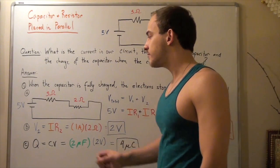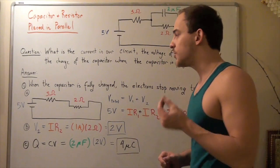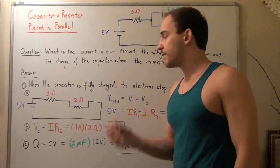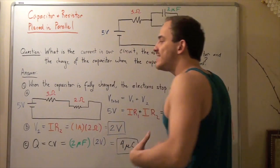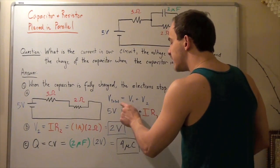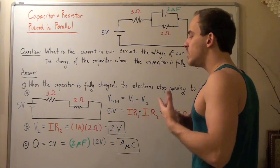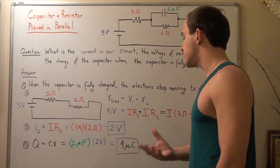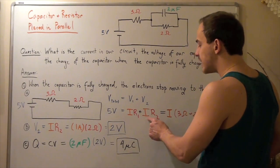They're adjacent to one another, and that means the current that goes through this resistor is the same as the current that goes through this resistor. That's because of conservation of charge — we know that from Kirchhoff's first rule. The total voltage, 5 volts, is equal to the voltage of this resistor plus the voltage of this resistor. So V total equals V1 plus V2. Using Ohm's law, which states that voltage equals current times resistance (V = I × R), 5 volts is equal to I times R1 plus I times R2.